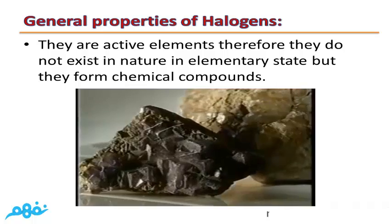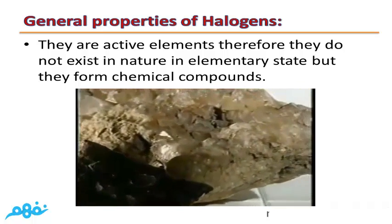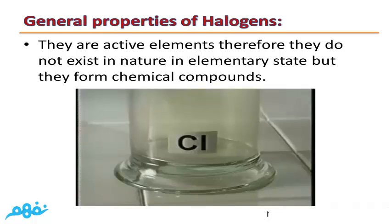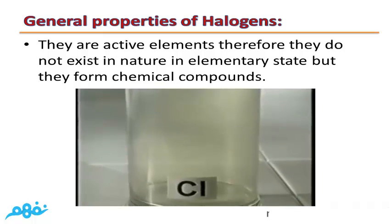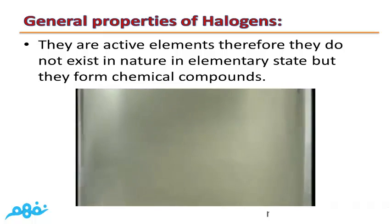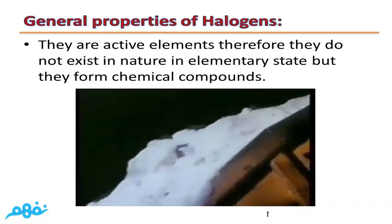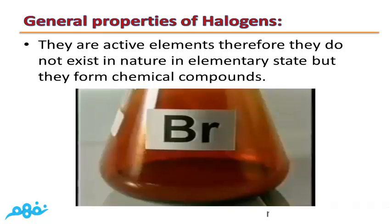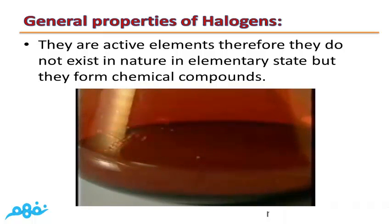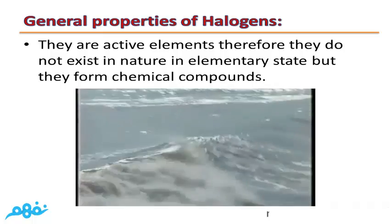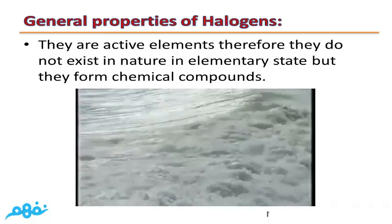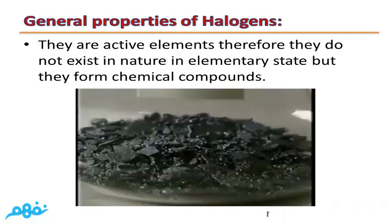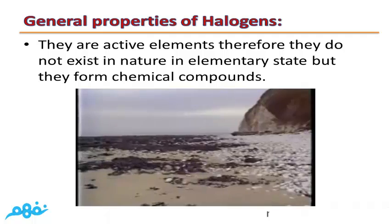Halogens are very active elements; therefore they do not exist in nature in elementary states but form chemical compounds. For example, Fluorine is found in feldspathic stones, Chlorine is found in table salt extracted from seawater, and Bromine can also be extracted from seawater. Because they are so reactive, they always form chemical compounds.